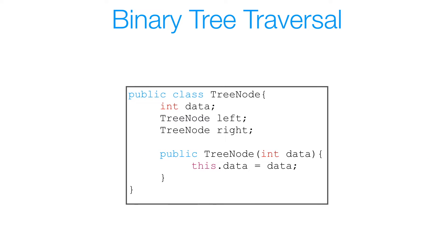We're going to use the same tree node class we've been using for the last three videos. We have our data field associated with every node in our binary tree, our left and right reference variables for the left and right subtrees, and our constructor that takes in the argument data to initialize the instance variable.